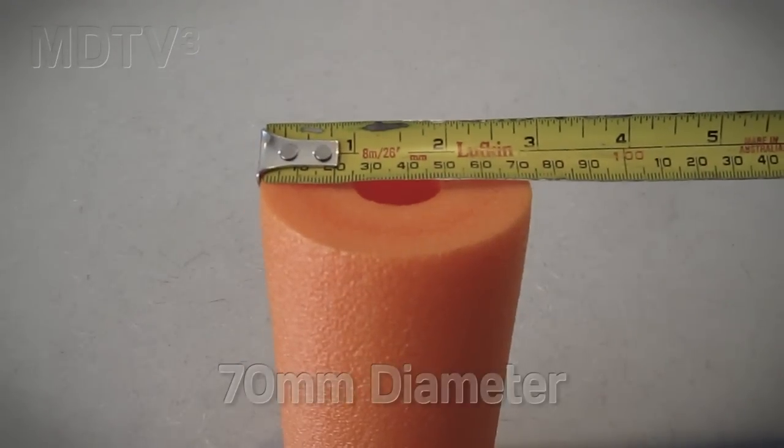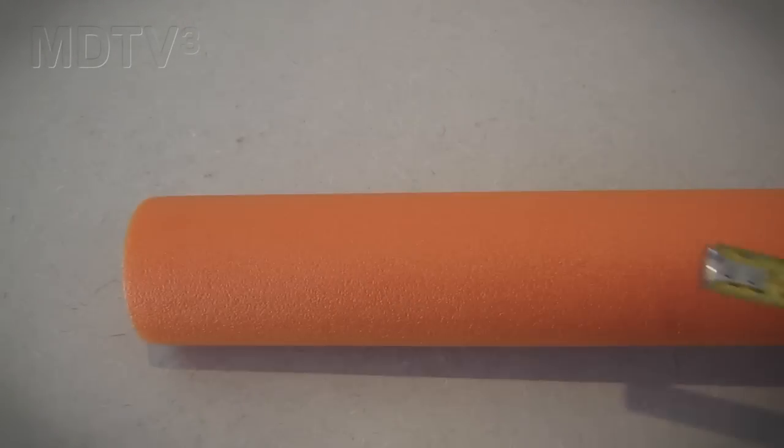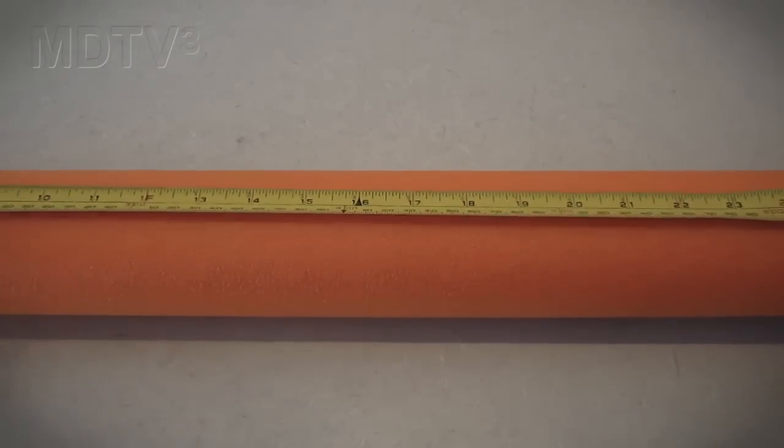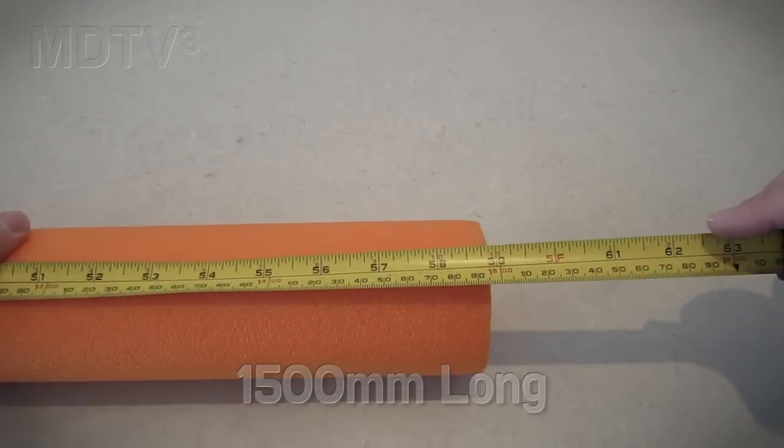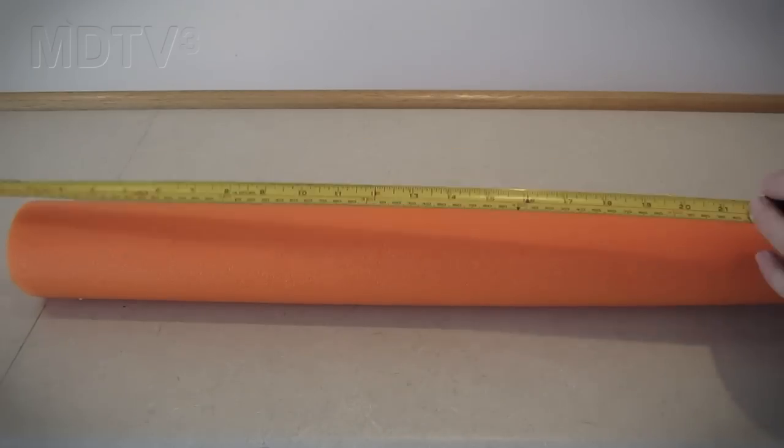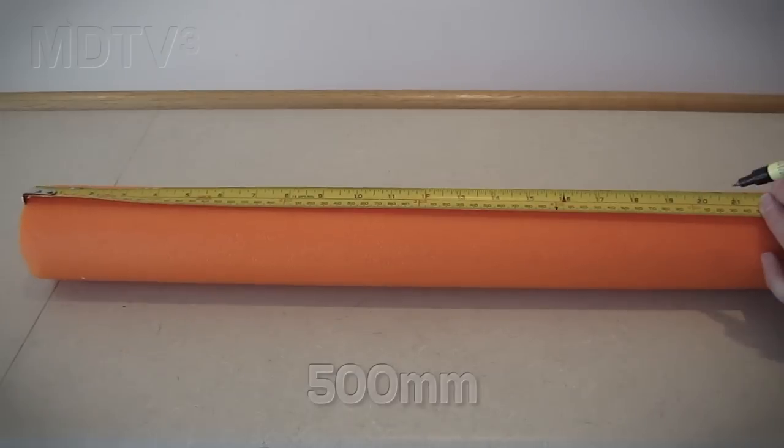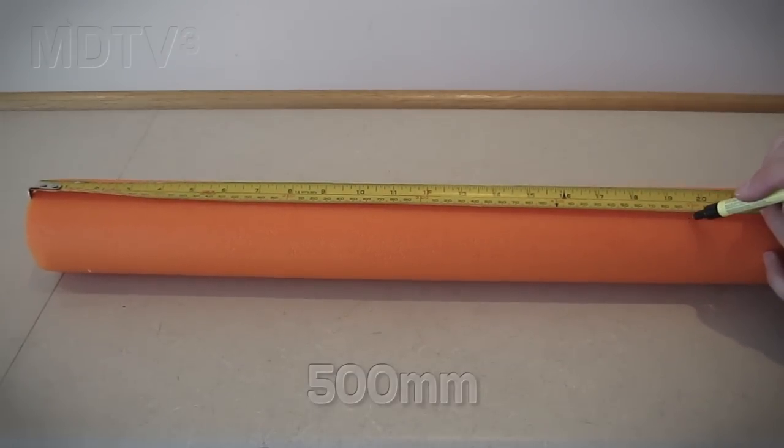First up let's look at the two scuba tank rack. Grab yourself a standard pool noodle about 70 millimeters in diameter - you can get these from most department stores. The pool noodle is approximately 1500 millimeters long. Mark out the cut points 500 millimeters long for the three sections along the pool noodle.